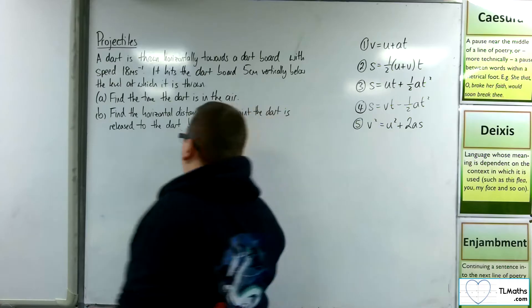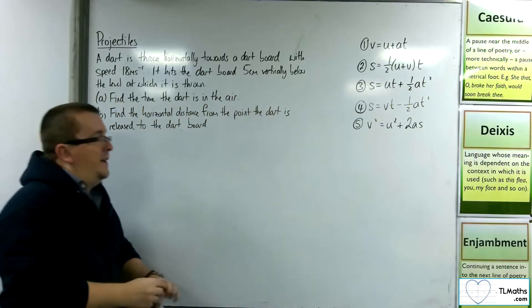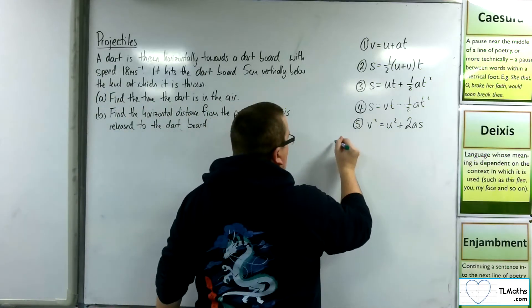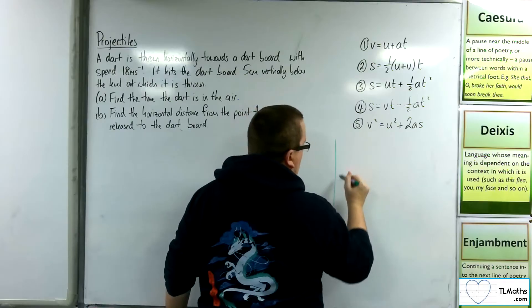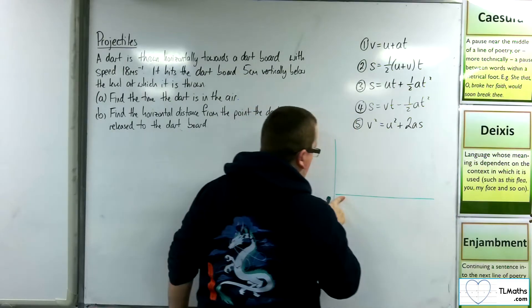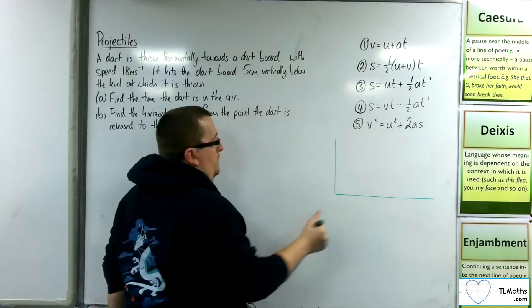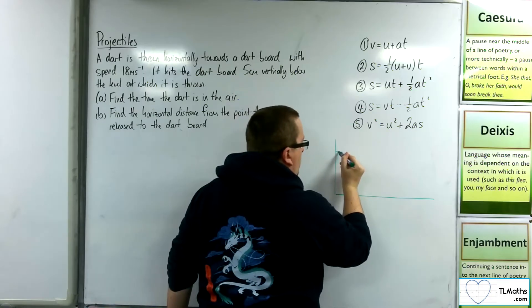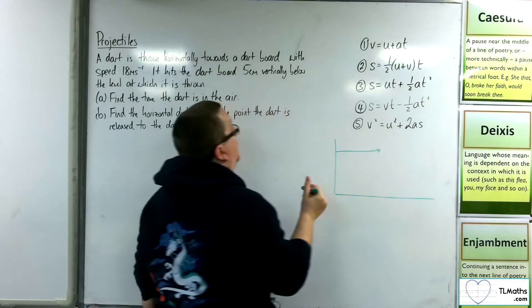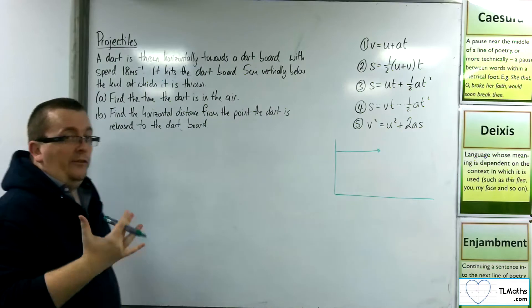Okay, so let's draw a diagram so we can see what's going on here. So we have something like that. There we are. Okay, so we have the dart being thrown horizontally with a speed of 18 meters per second.